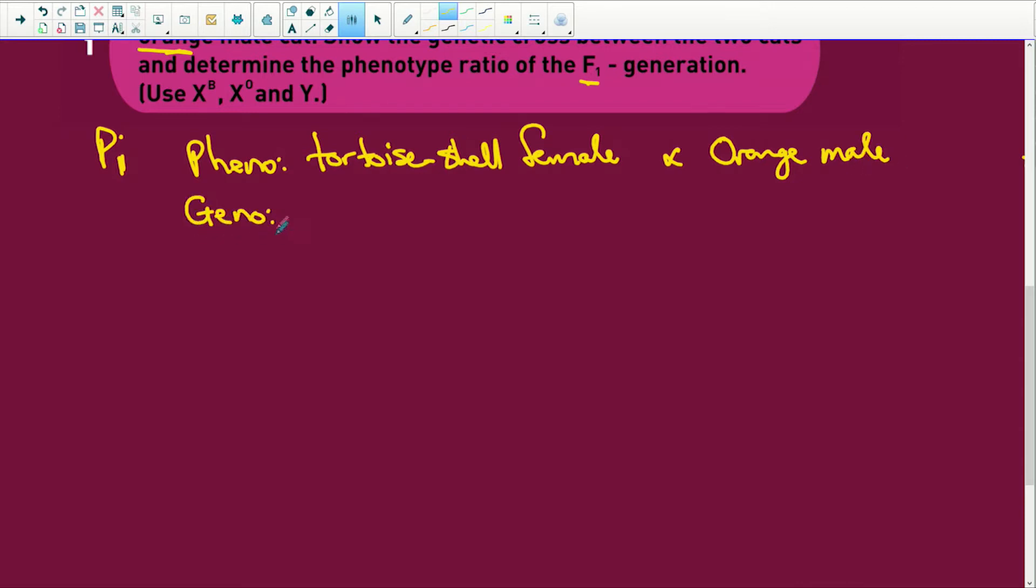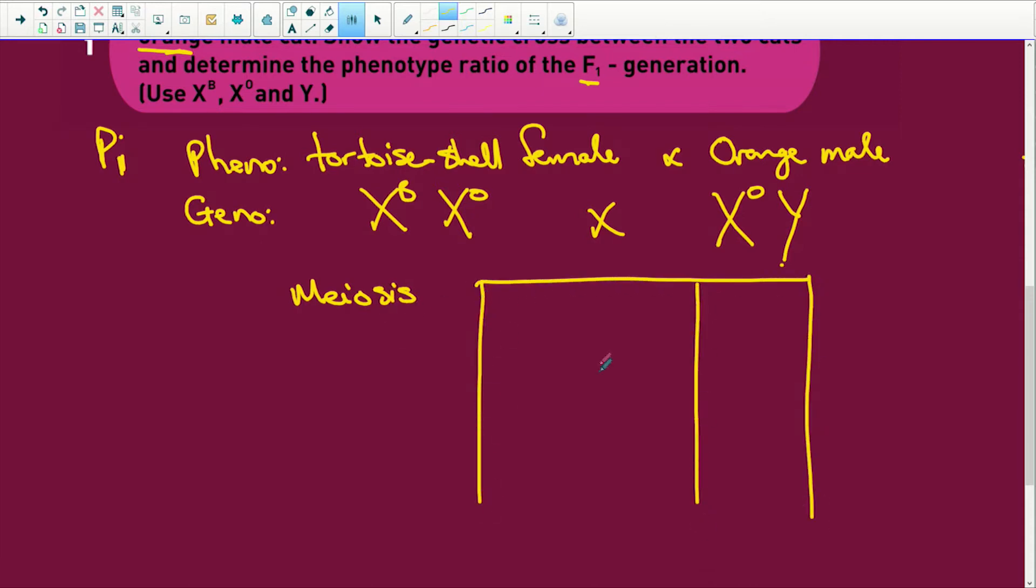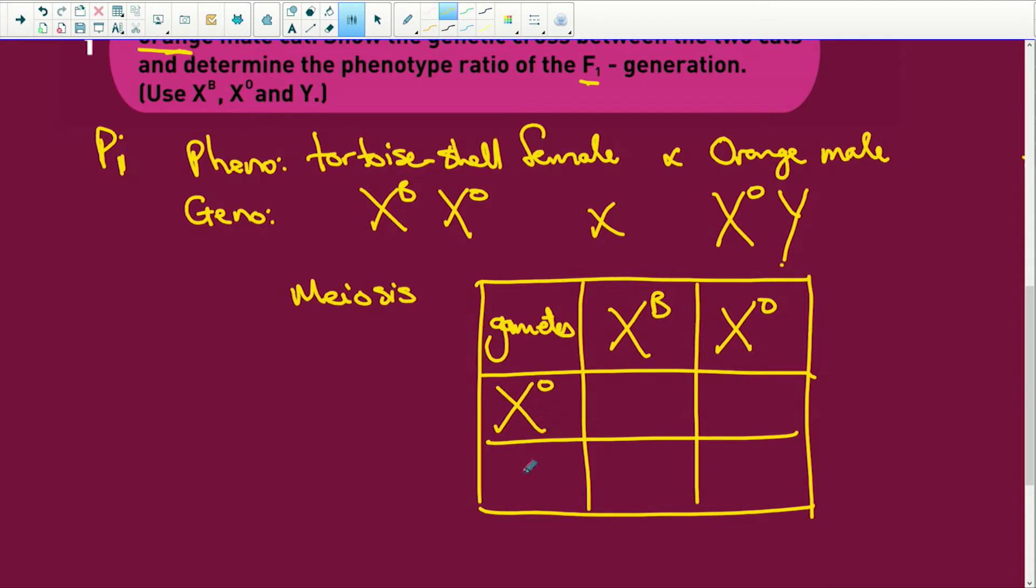So what do we have in the genotype? Okay, the tortoiseshell female is going to be XBXO. And the orange male is going to be XO, but doesn't have another X. A male has got a Y. Alright, so we have meiosis and we have our little Punnett square with our nine little blocks. And we have our gametes.